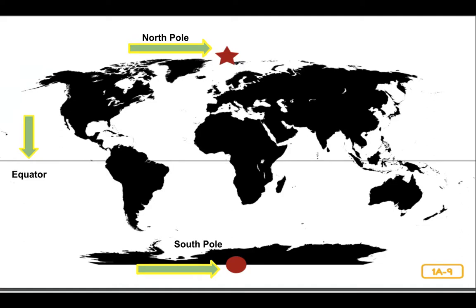The earth's orbit around the sun is not the only way the earth moves in space. This map shows the earth's north and south poles — imaginary points at the northernmost and southernmost parts of the earth. The axis of rotation is like an imaginary line going right through the earth at the north and south poles. The earth rotates or spins in the same way that a globe spins on its axis. It takes one day, or 24 hours, for earth to make a complete rotation.